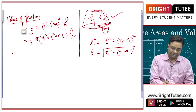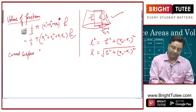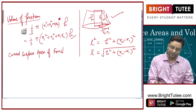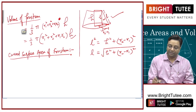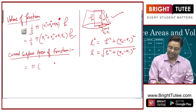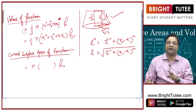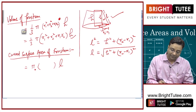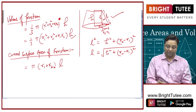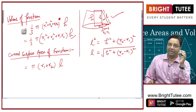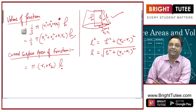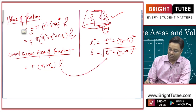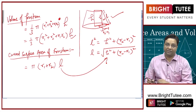Talking about curved surface area of the frustum: the curved surface area of a cone is πrl. This time we have two radii r1 and r2, so the curved surface area of a frustum will be π(r1 + r2)·l, where l is the slant height calculated using the earlier formula.